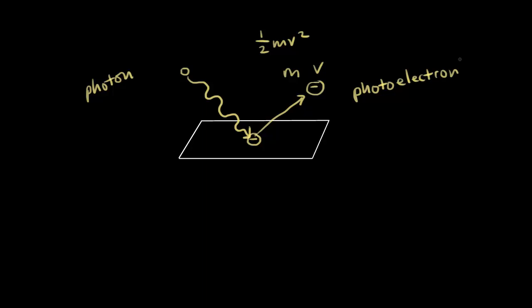If you think about this in terms of classical physics, you could think about energy being conserved. So the energy of the photon — the energy that went in — what happened to that energy? Some of that energy was needed to free the electron. I'm going to call that E-naught, the energy that freed the electron. And then the rest of that energy must have gone into the kinetic energy of the electron — the kinetic energy of the photoelectron produced.